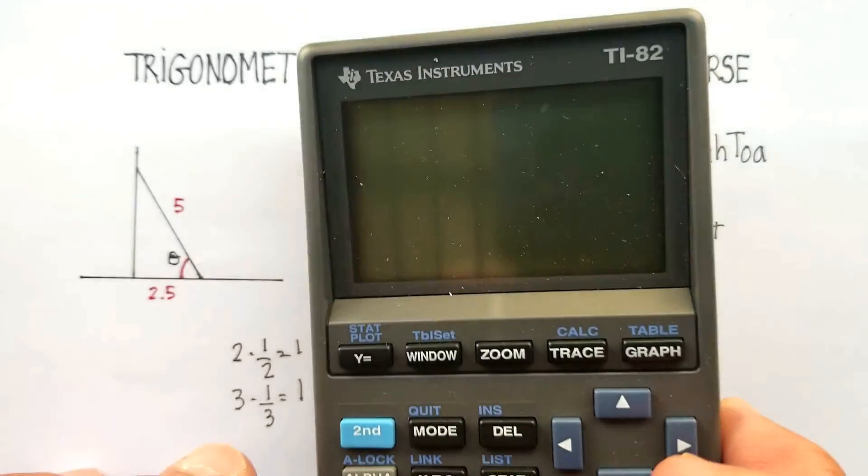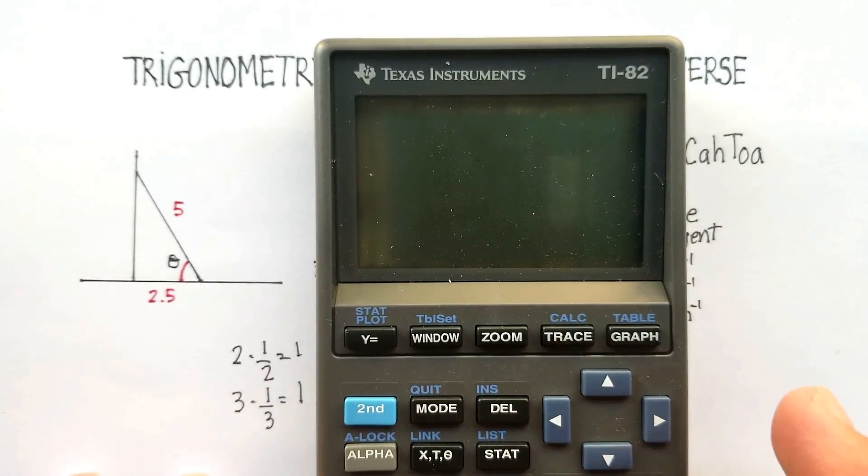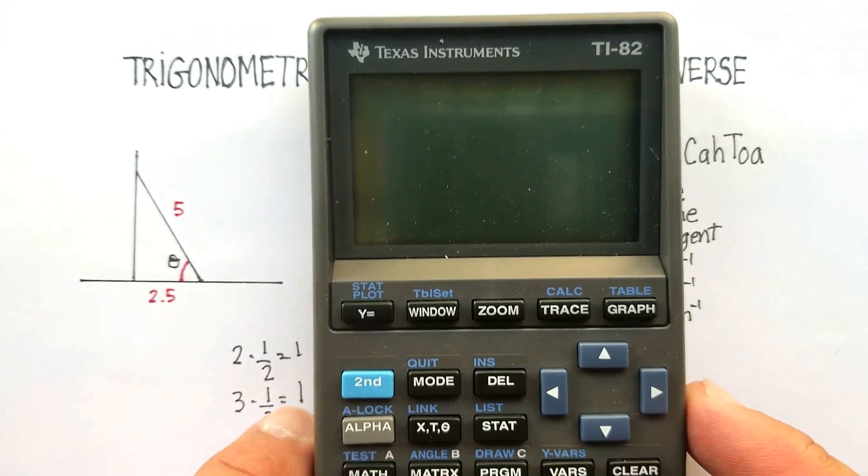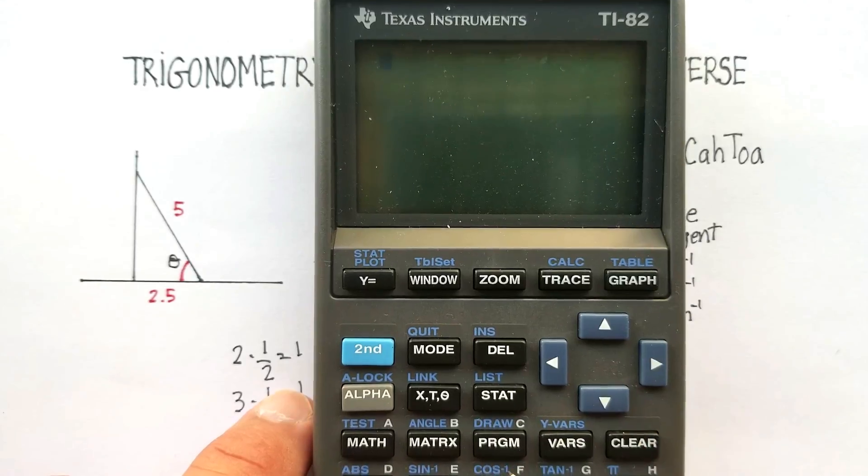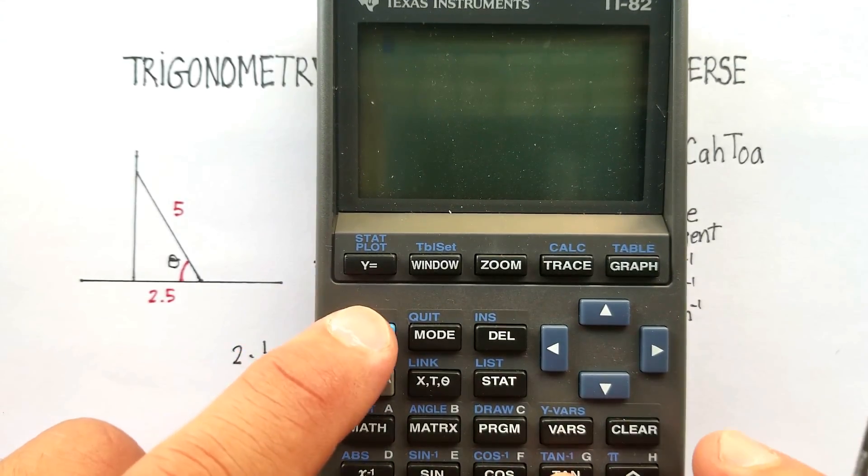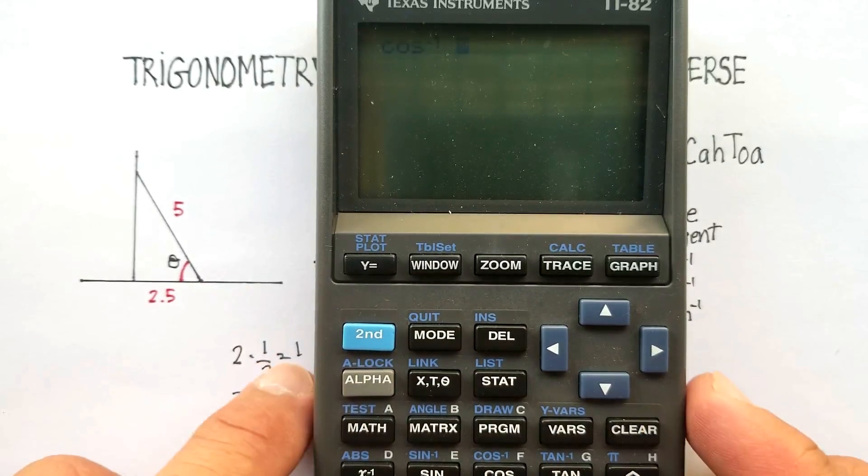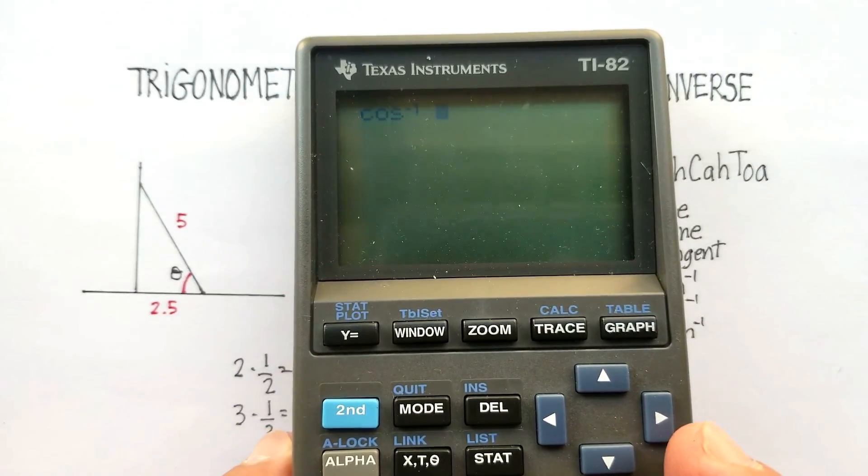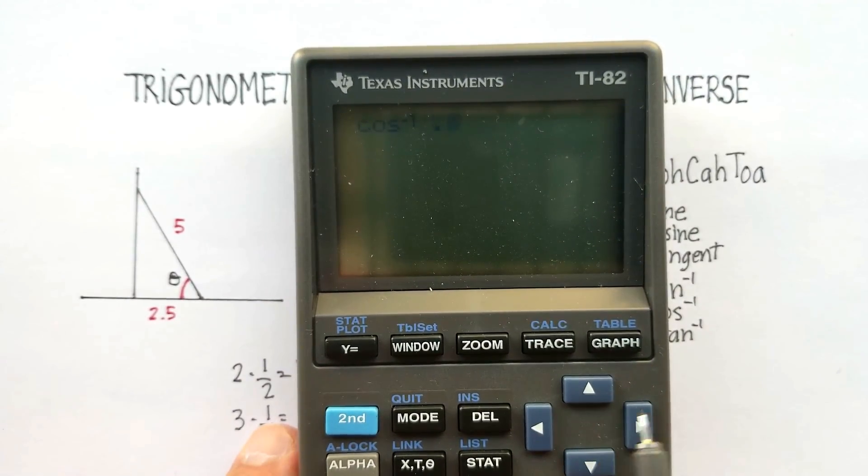So here's my calculator. You can actually do it online as well. There's a lot of very good calculators online. Let me just clear that. Now, inverse cosine, you hit the second function. And you'll see right down there, see where it says cosine negative 1? So that activates that. And you can see in your screen, probably not so well, inverse cosine and then 0.5.